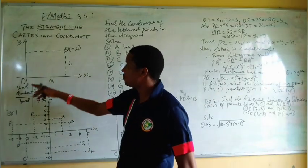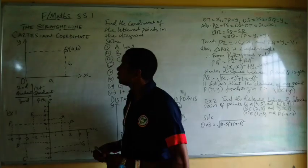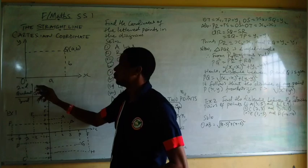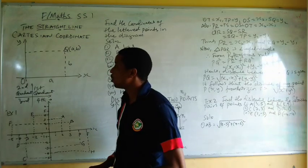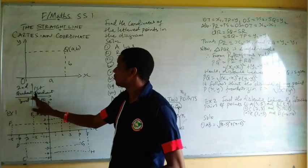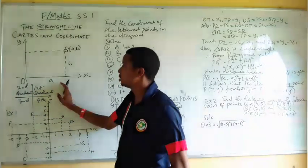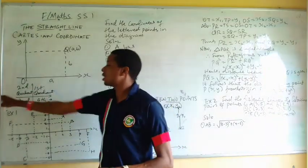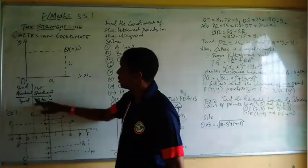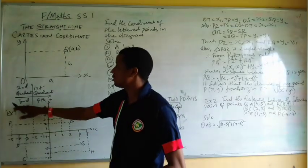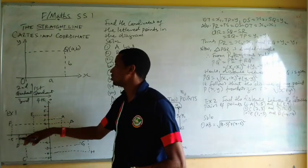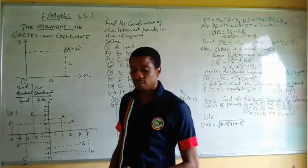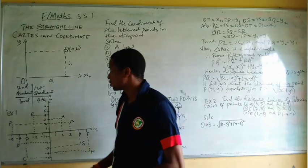We can divide the points into four quadrants. The first one is the first quadrant, which is along the positive X axis. The second one is also along the X axis. Below the X axis in the negative end is the third quadrant, and the positive X axis side is the fourth quadrant.